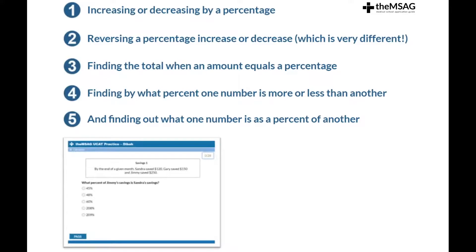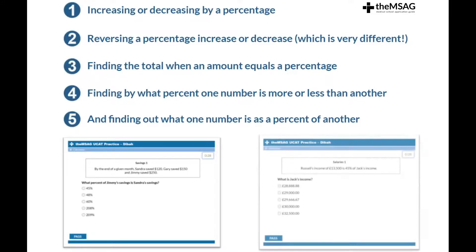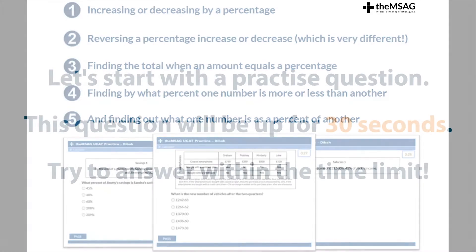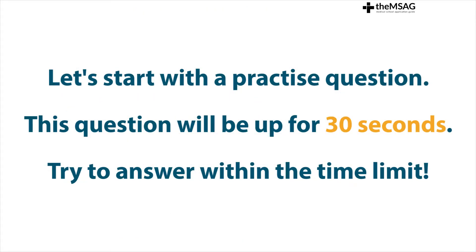Make sure you understand how each of these percentage operations are different from one another. To tackle the UCAT quantitative reasoning section, this is your core knowledge. Make sure you master this before moving on to the other lessons. Are you ready? Is your seatbelt on? I bet you'll do great — let's go.